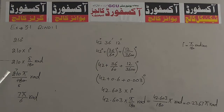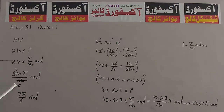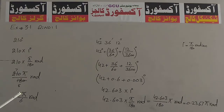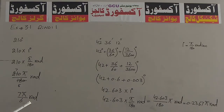हम 3 से इसको cancel कर सकते हैं. ऊपर 3 से cancel करने पर 7 आएगा, नीचे 3 से cancel करने पर 6 आएगा. तो ऊपर आएगा 7, बटा में आएगा 6 Radian. यह हमने degree को Radian में convert किया है.